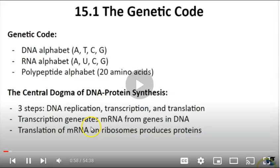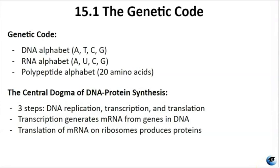Since Mendel's work was rediscovered in 1900, our understanding of genes has evolved significantly. Genes are tangible molecules made of DNA, organized linearly on chromosomes, and carry instructions for building proteins crucial for cell functions. The genetic code refers to the DNA alphabet, the RNA alphabet, and the polypeptide alphabet — the sequence of amino acids. The genetic code comes to exist via the central dogma, which consists of three steps: DNA replication, transcription, and translation.